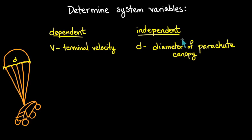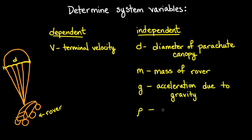Okay, here's our list: canopy diameter, mass of the rover (we assume the mass of the parachute to be negligible), acceleration due to gravity, and the density and viscosity of the atmosphere.